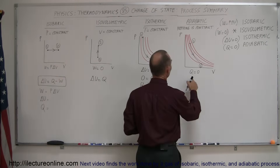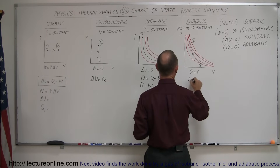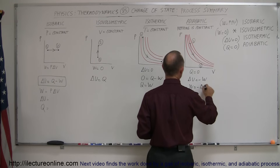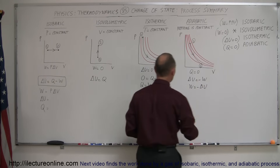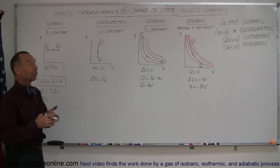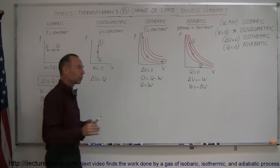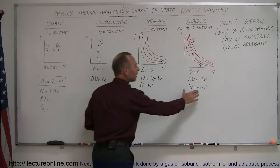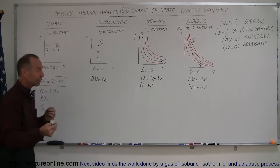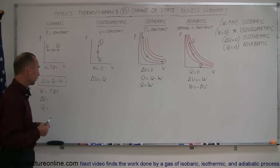For the adiabatic process, since Q = 0, ΔU = −W, or W = −ΔU, so we can find the work done by knowing how much the internal energy changes. This is more complicated because none of the three variables are constant, so we have to find the relationship between P, V, and T in an adiabatic process.